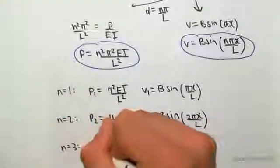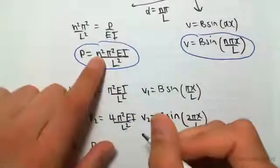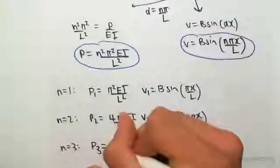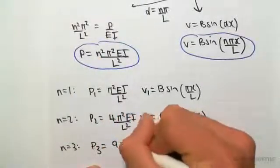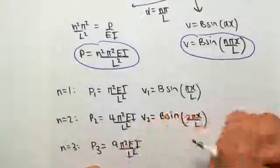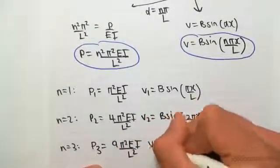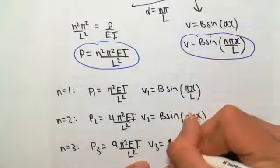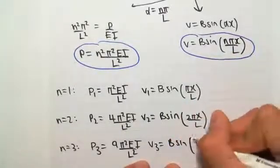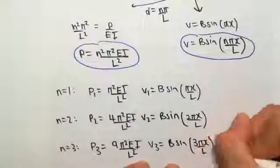For n equals 3, p3 would equal n squared, so 3 squared, so 9 pi squared EI on L squared. And v3 would equal B sine, subbing in for n, 3 pi x on L.